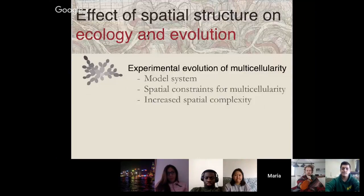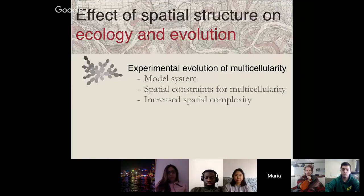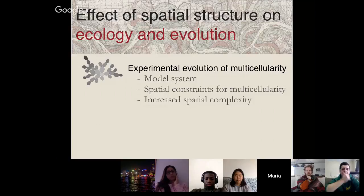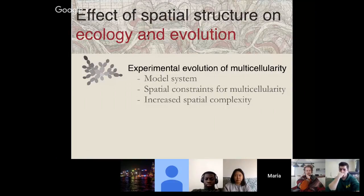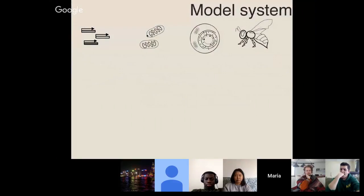I'll first briefly walk through the model system, which you're a little familiar with. Then I'll talk about two different parts of my work. One is on the spatial constraints for multicellularity — how when multicellularity evolves, it changes space, changes how cells are organized and the size of the organism, and that can affect its success. And I'm also going to talk about how multicellularity changes spatial complexity — we suddenly have groups of cells with their own spatial gradient, and that changes a lot about the environment.